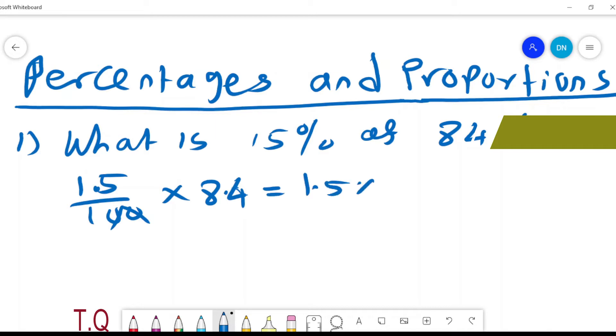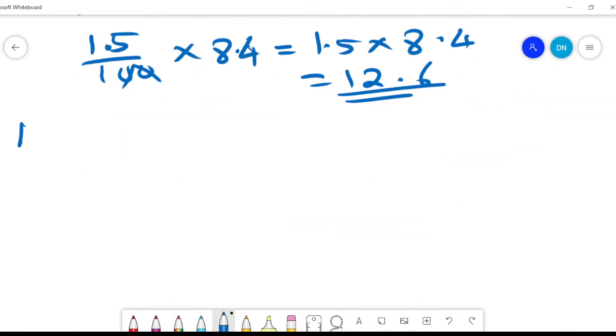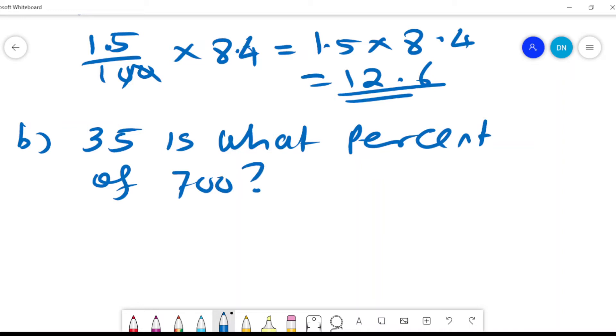And that gives us 12.6. Number B: 35 is what percent of 700? So it will be 35 over 700 times 100, and that will give us 5%.